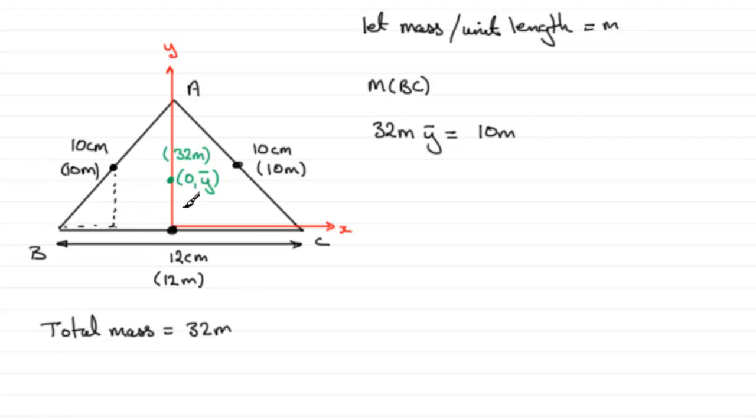So by Pythagoras' theorem, we know that this length is 10 centimeters, this length along here has got to be 6 centimeters. By Pythagoras' theorem, this one turns out to be 8 centimeters. It's going to be the square root of 10 squared minus 6 squared, 100 minus 36, which leaves us with 64 to square root, which is 8.